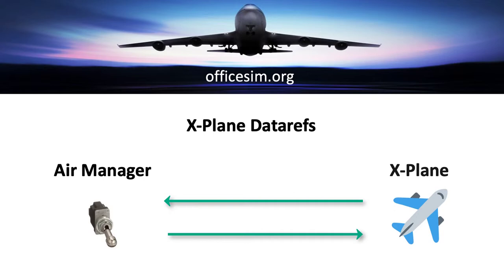X-Plane will then do whatever that switch is supposed to do — say if it's a light, it will turn the airplane lights on. If X-Plane starts the plane up with the lights already on, it would send a signal to Air Manager saying the lights are on. Air Manager would flip the switch to on and send the signal back. It's a good looping system so that the plane will be in sync with whatever switches are in Air Manager.